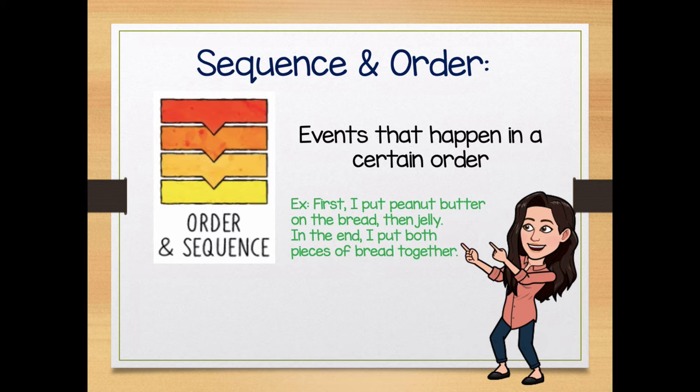It says, 'First, I put peanut butter on the bread, then jelly. In the end, I put both pieces of bread together.' Does that give you a picture in your mind of what you would have to do step by step? Yes. Sequence and order is kind of like following a recipe or following directions — things that must happen in a specific order.